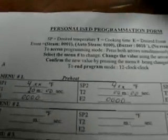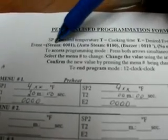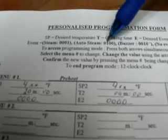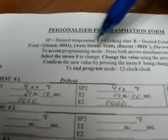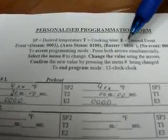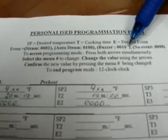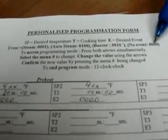You will see you have different settings. You have 00 for the steam, 0100 for the auto steam, you have the buzzer that is 0010, and you have no oven that is 000.